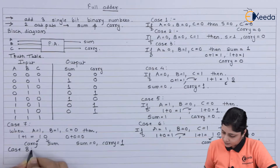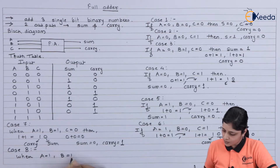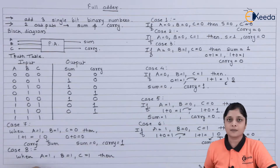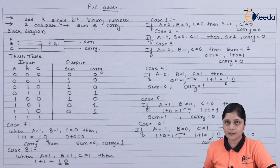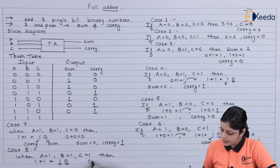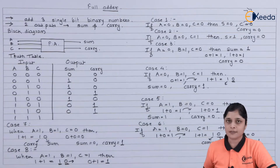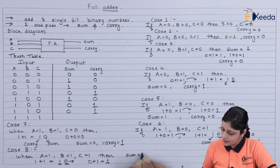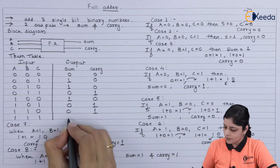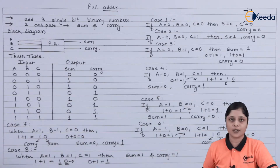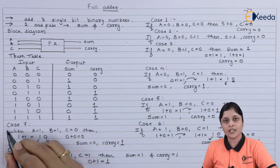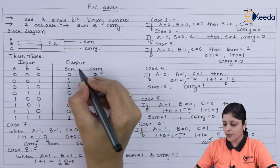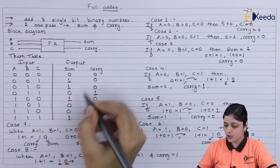Case 8: when A equals 1, B equals 1, and C equals 1, then 1 plus 1 is 10 — sum is 0, carry is 1. Consider that 0 for further process: 0 plus 1 is 1. So finally sum is 1 and carry is also 1, because 1 plus 1 is 10 — sum 0, carry 1 — and 0 plus 1 is 1 with carry already 1. In this way you form the table and generate outputs for sum and carry, then design the circuit using K-map.